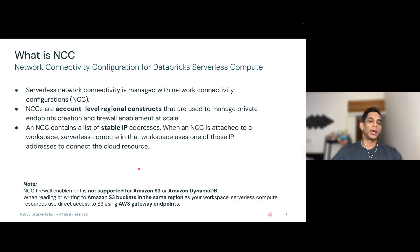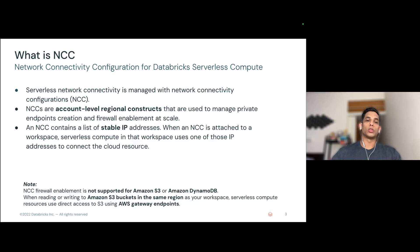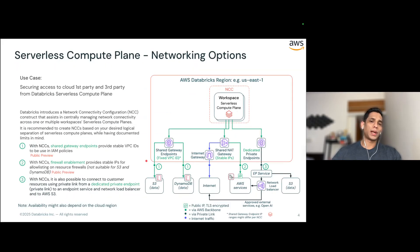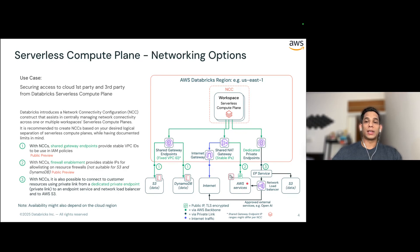An important side note: NCC firewall enablement is not supported for Amazon S3 and Amazon DynamoDB. This is because for S3 buckets in the same region as your workspace, serverless compute uses AWS gateway endpoints for connection. There are primarily three things you can do with NCC: create shared gateway endpoints to connect securely to S3 and DynamoDB; expose stable IPs for serverless clusters to whitelist on a firewall; and create private link connections to AWS services via private endpoints, endpoint service, and network load balancer. For this video, we are going to focus on the second part — exposing the stable IPs for the serverless clusters.